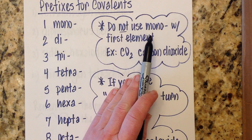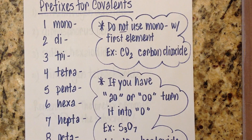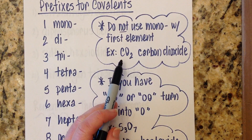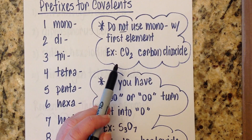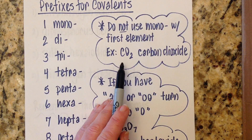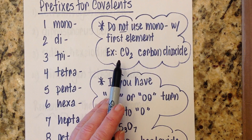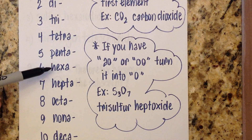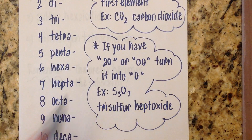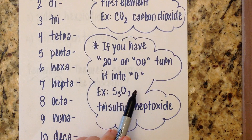We do not use mono with the first element — that's really the only tricky thing to remember. For example, most of you know that CO2 is carbon dioxide, not monocarbon dioxide. So for the first element only, if there's just one, don't use mono. The other thing is: sometimes when you put the prefix in front of the element name, the prefix ends with a vowel and the element starts with one. If you have an A-O combination — like hexa in front of oxide — you drop the A off hexa. An A-O or O-O combination just becomes a single O.